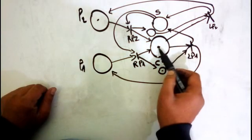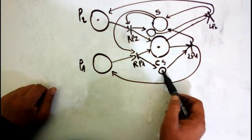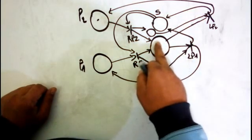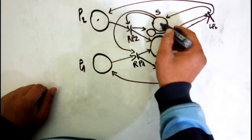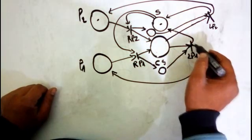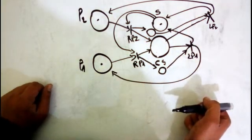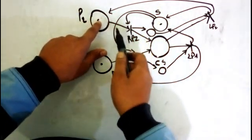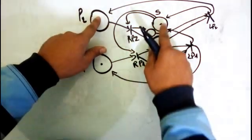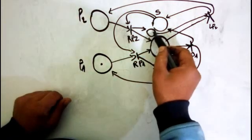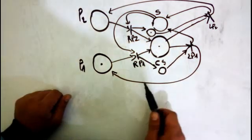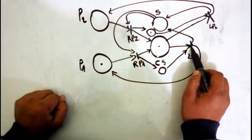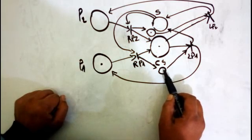Now 'run P2' is not fireable because it needs one token in the semaphore, which is gone. We can only fire 'liberate P1' because it needs a token in the critical section and a token in P1's associated place. When we fire it, we remove those tokens - that means the critical section is free - and we return the token to the semaphore. Now 'run P2' is fireable; when we fire it we remove P2's token and the semaphore token and put tokens in the critical section and P2's place.